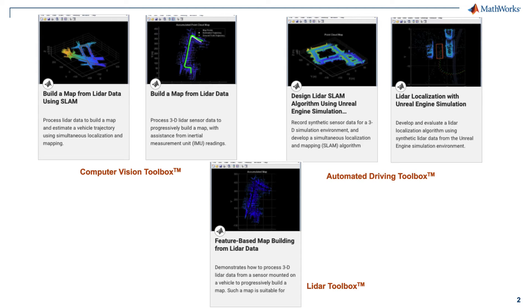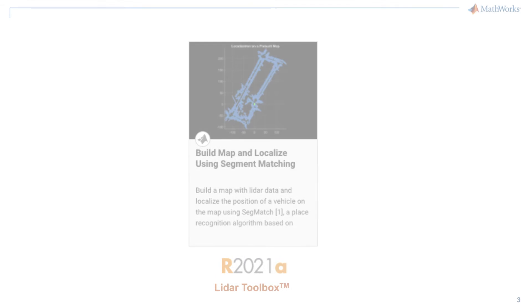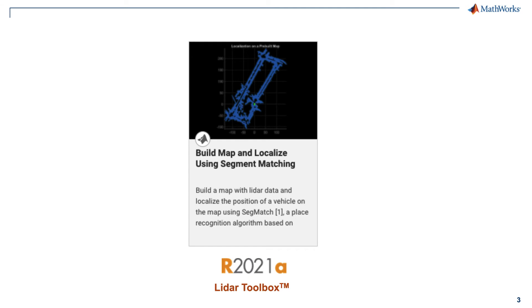If you want to learn more about this, please look at these examples in our documentation. The graph SLAM technique introduced previously has some shortcomings. It might not be robust in large-scale environments, and the presence of dynamic obstacles might make detecting loop closures challenging. For such scenarios, we have a new technique in the 21A release called SegMatch, a place recognition algorithm based on segment matching.